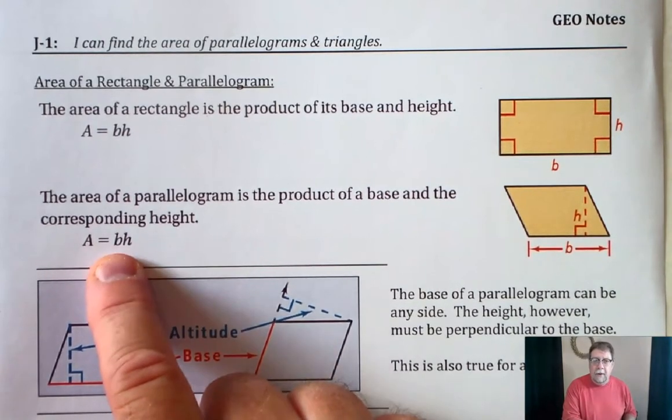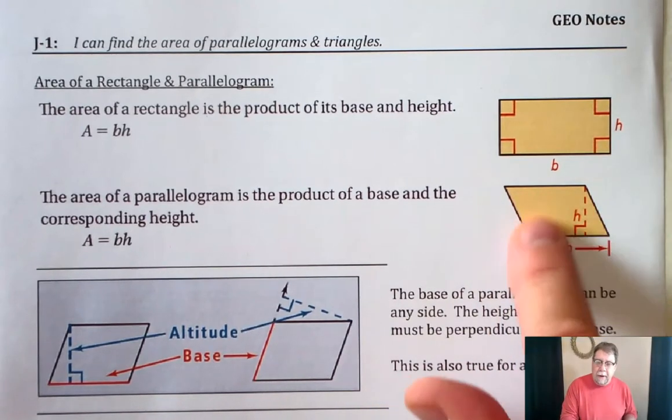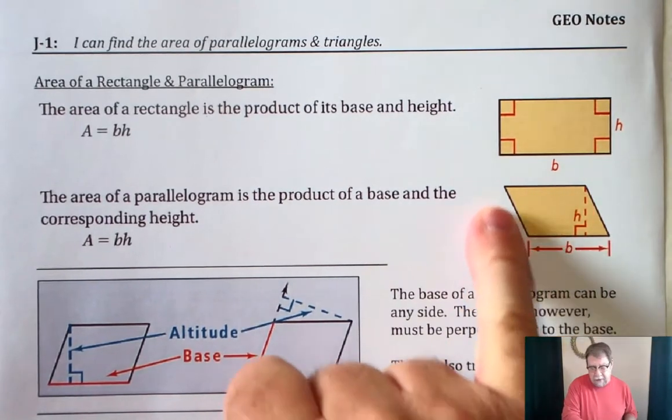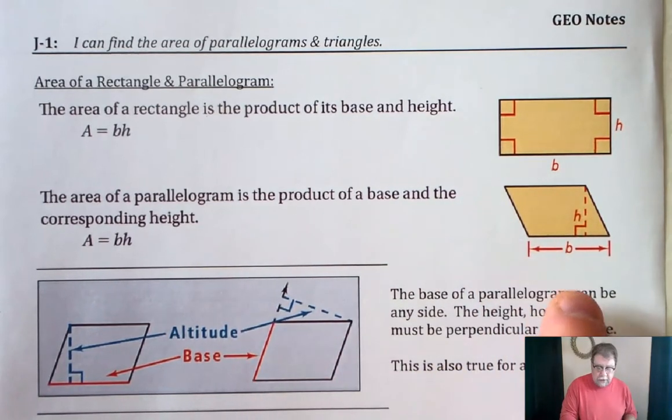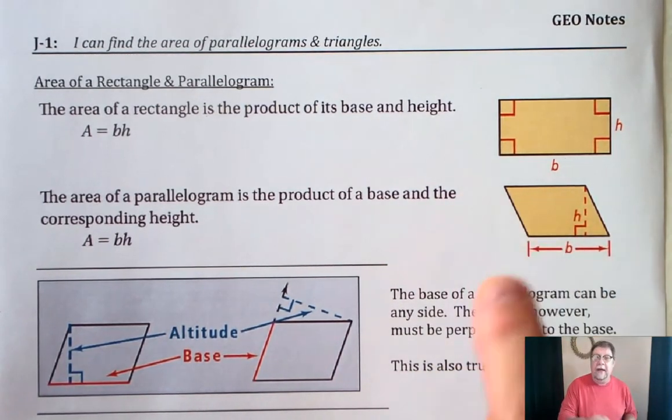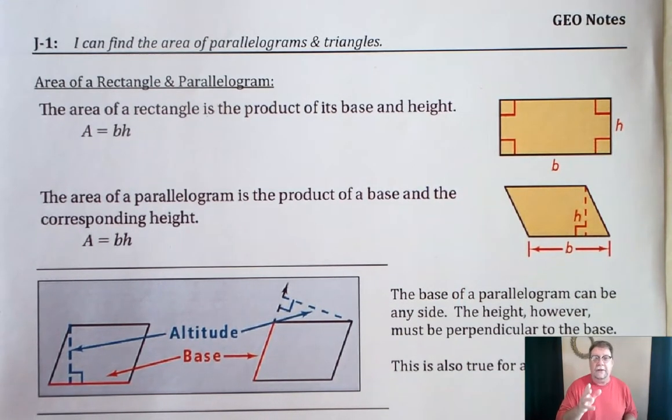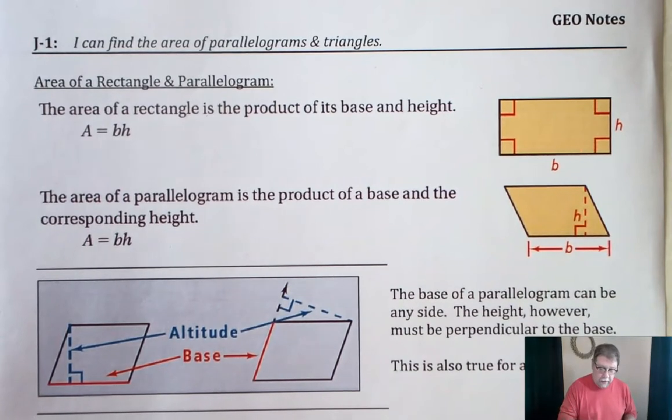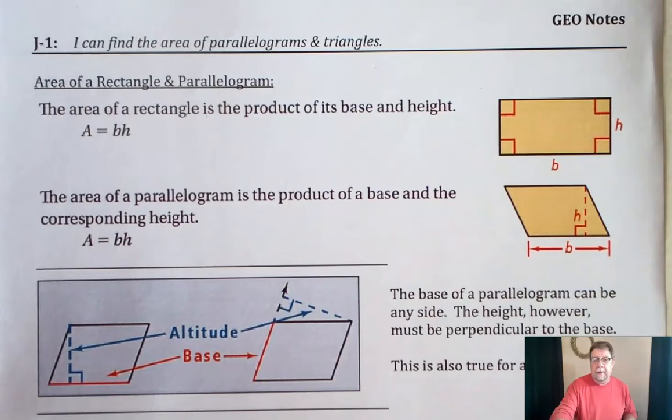Now, the problem that students have is when they get a picture of a parallelogram, a lot of times you're given this slanted length. And so a lot of times people just take the base times that slanted length, and that's not right. You'll get the wrong answer for that. Remember, the base and the height have got to be perpendicular. And so here we have the base on the bottom, and the height is going straight up.